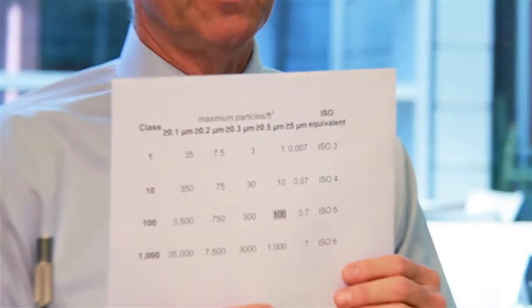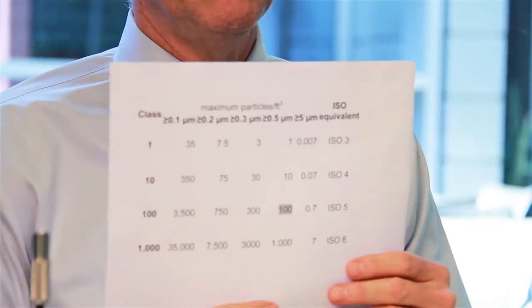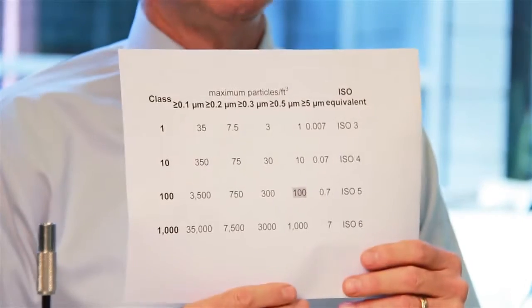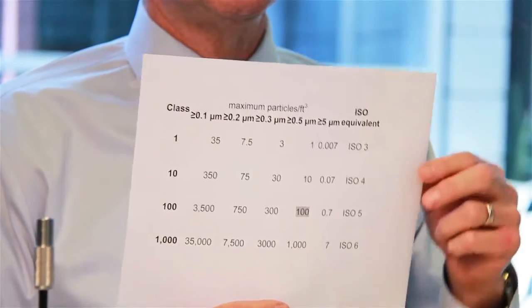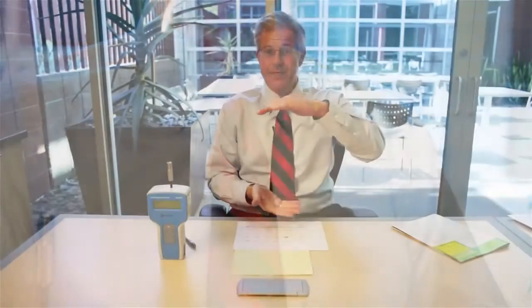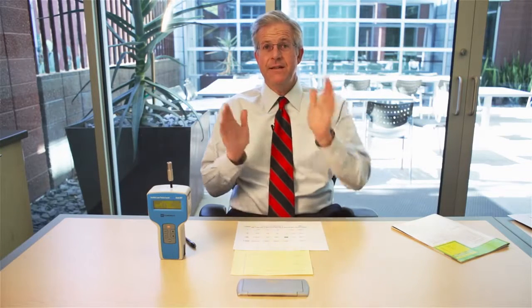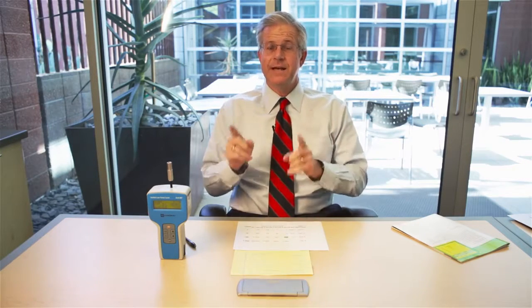Clean room classification standards started with what we'll call the English system — the original system. A more common system now is the ISO system. The clean room classification systems are basically built around the concept of one cubic foot of air as the sampling size, and then we look at the size of particles within that one cubic foot of air sampling size. That gives us our clean room classification.